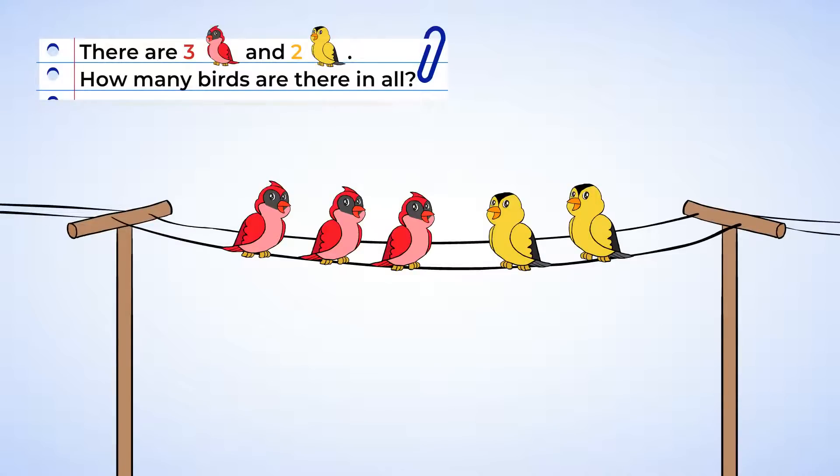So, how many birds are there in all? Well, this problem is a little bit different. All the birds are already on the line. But this is still an addition problem. Here are some of the clues. The problem says in all. Well, that's a clue that we're going to be adding. Another clue is the picture. We have some red and some yellow birds. And all of the birds together means putting the two numbers together. And that's adding.